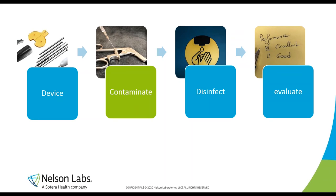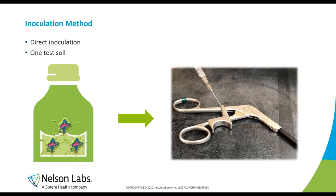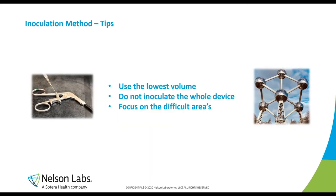Step two: contaminate the device. We take microorganisms and bring them onto the device — for example, applying droplets of microorganisms onto the surface. Use a low volume of droplets with a high concentration of microorganisms instead of a large volume. Do not inoculate the whole device — focus only on the difficult areas. Define those areas in your validation protocol so that lab personnel know exactly where to apply the microorganisms.